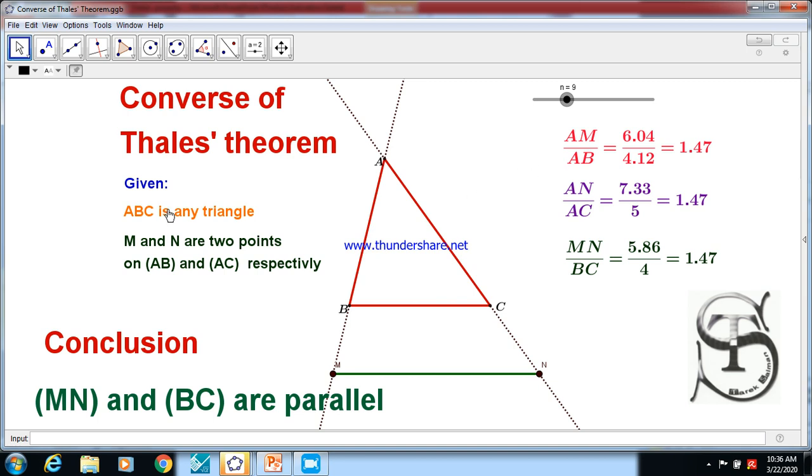So if we have a triangle and the ratios are proportional, automatically MN and BC are parallel. If I change the position of M and N, you see that MN and BC are still parallel sides. Same ratio. This is the Converse of Thales' theorem.